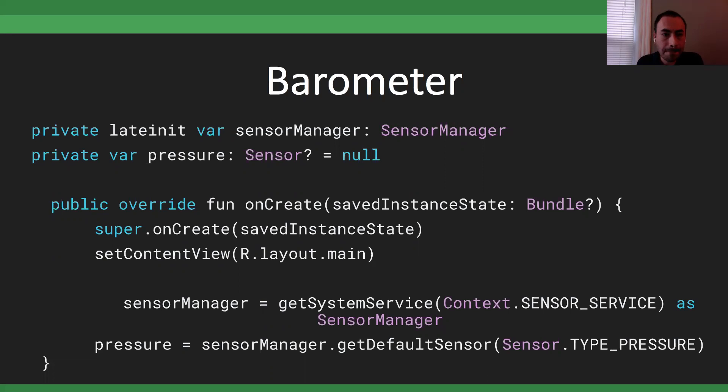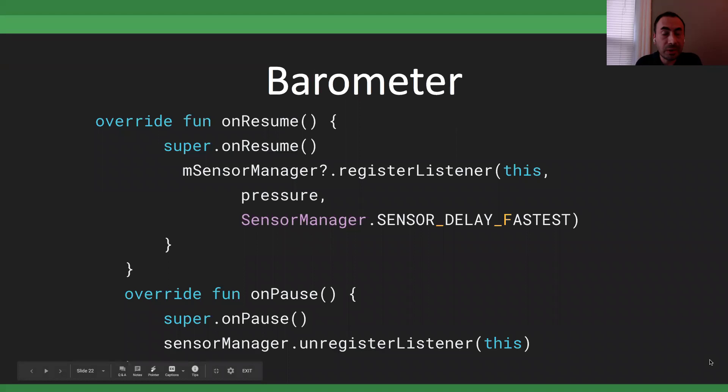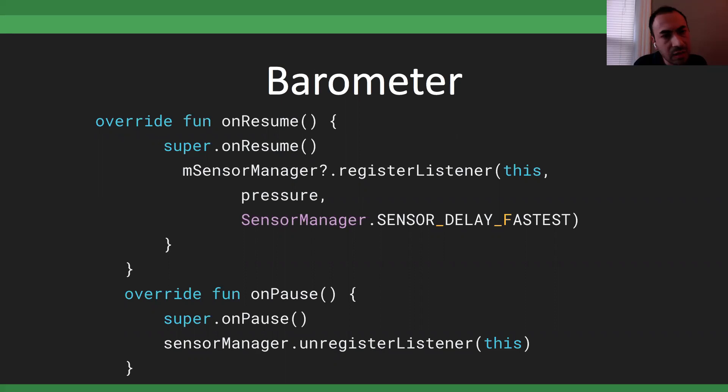In my coding style, I always register the listener in onResume and unregister it in onPause, because this listener is battery-intensive — you get multiple callbacks constantly. If the user leaves the app, activity, or fragment, you want to unregister to release resources.